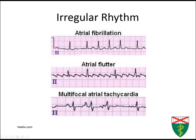Multifocal atrial tachycardia involves different foci in the atria as the origin of depolarization. We see a P-wave before every QRS, but the P-wave morphologies are different, which tells us the beats are not coming from the sinus node but rather from different foci.